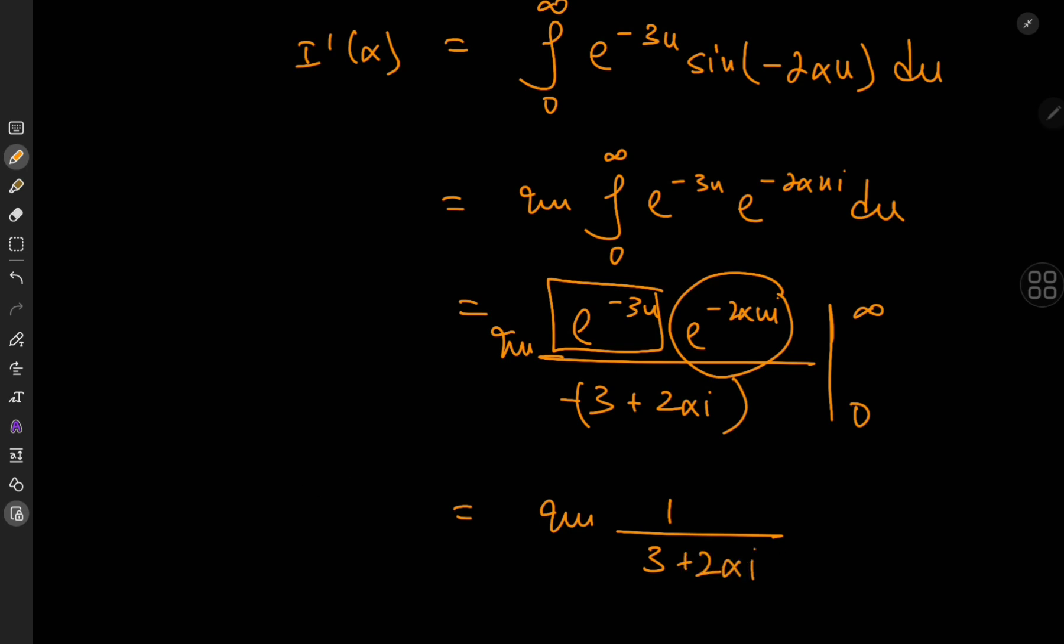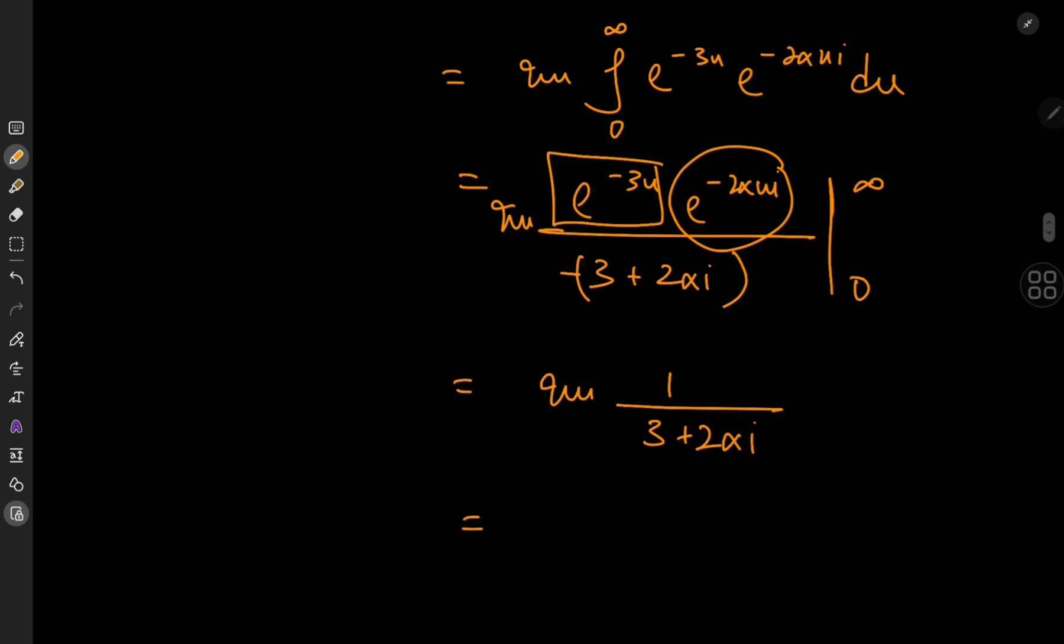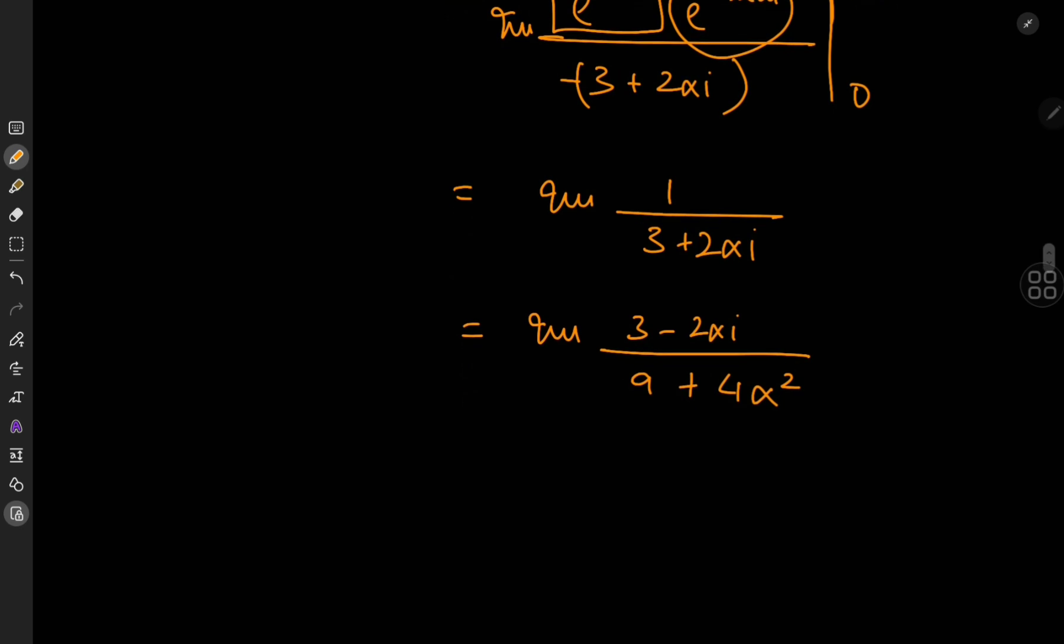And the imaginary part can be extracted by expanding using conjugates. So we have the imaginary part of 3 minus 2 alpha i divided by 9 plus 4 alpha squared. Yeah, that's about right. And this implies that i prime of alpha equals negative 2 alpha divided by 9 plus 4 alpha squared.